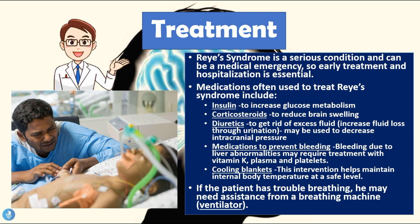Reye's syndrome is a serious condition and can be a medical emergency, so early treatment and hospitalization is essential. Medications used to treat it include insulin to increase glucose metabolism, corticosteroids to reduce brain swelling, and diuretics to reduce excess fluid and decrease intracranial pressure. Medications to prevent bleeding may also be needed, as liver abnormalities impair coagulation — these patients can be supplemented with vitamin K, plasma, and platelets.